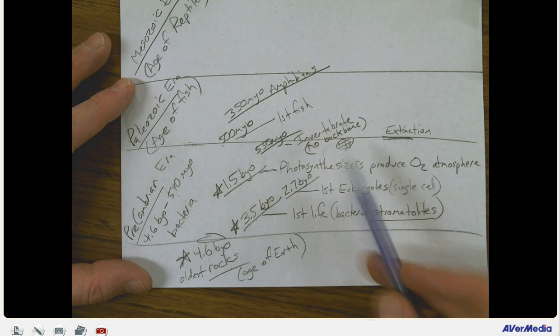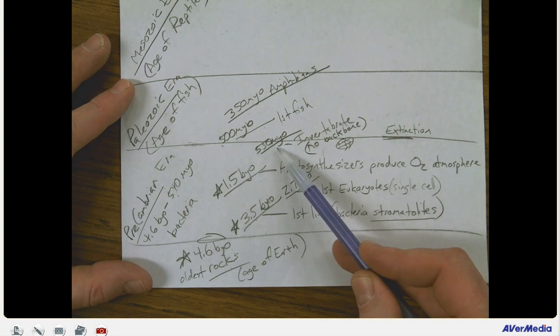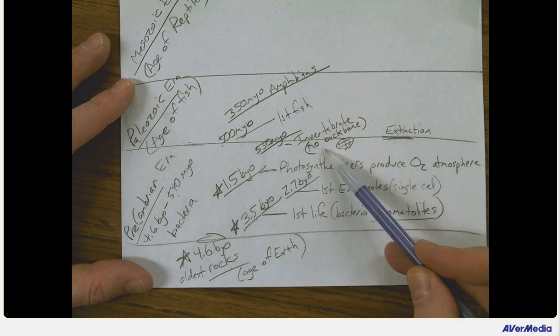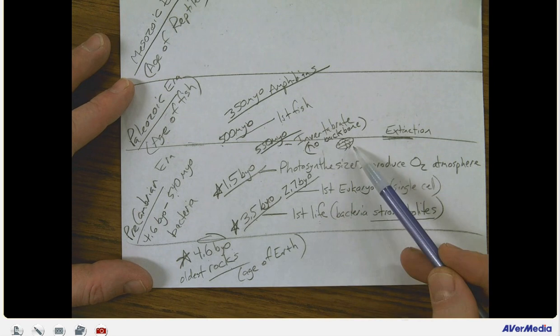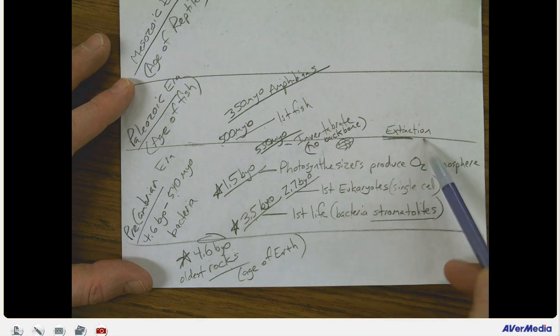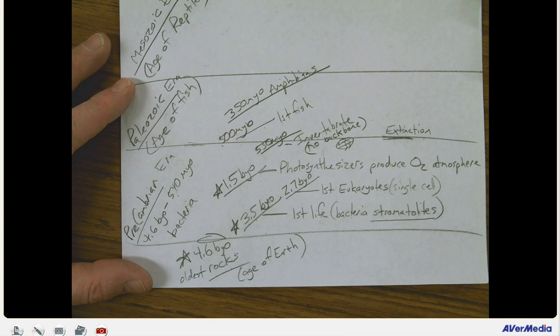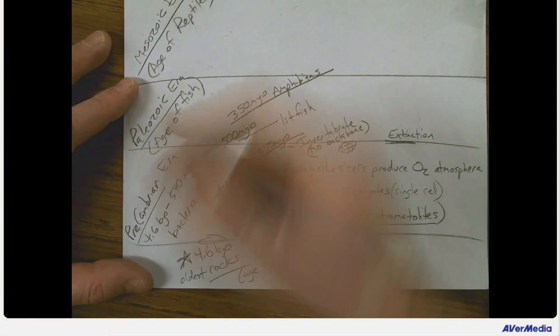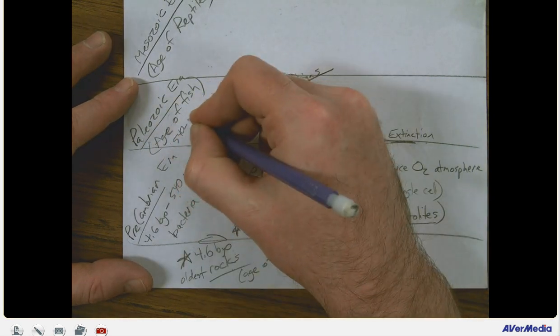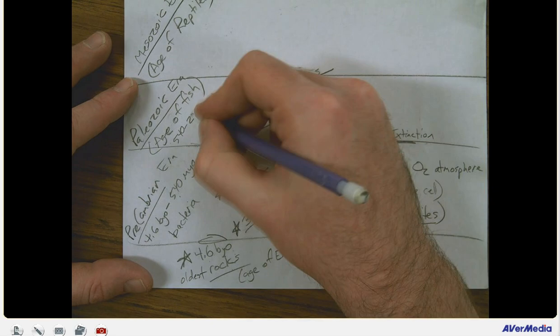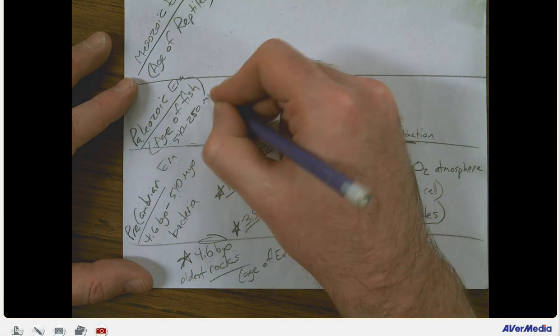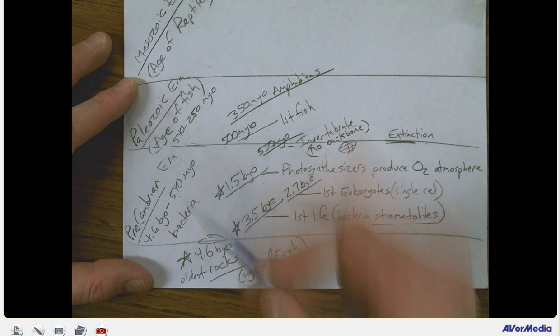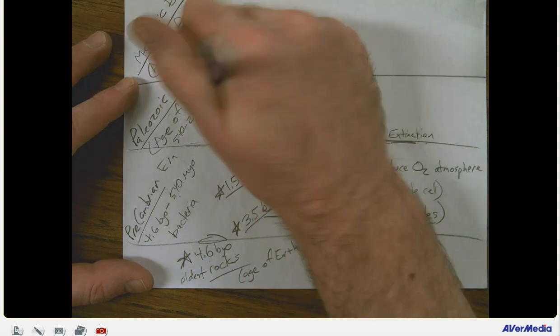So the next major event that we have in Earth's history is 550 million years ago. We have the first invertebrates, animals with no backbone. Things like trilobites become very common at that time. The Paleozoic is the next era. This ranges from 540 million years ago to 250 million years ago. You don't have to have that memorized, but we'll go ahead and write that in. MYA is million years ago.